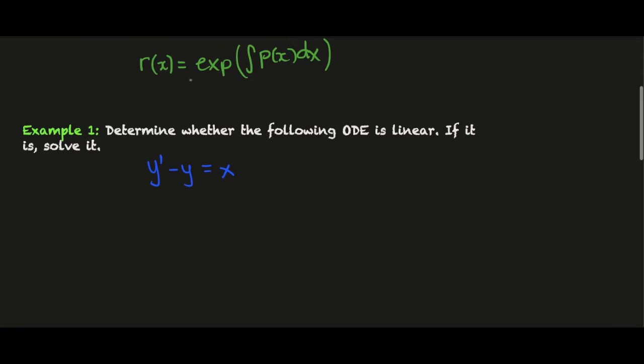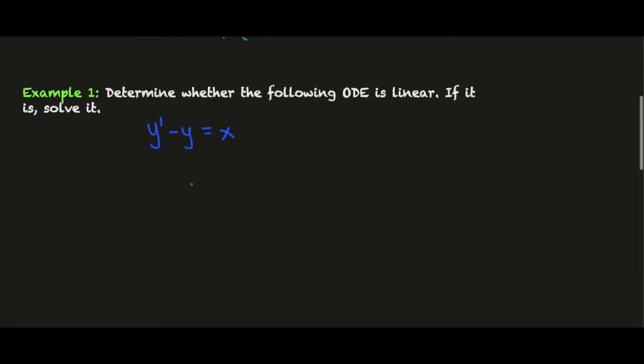Let's start with an example. Determine whether the following ODE is linear, and if it is, solve it. What is a linear ODE? A linear ODE is one in which the highest power of y is 1. In this case that happens to be the case since this is to the power of 1, there'll be a y to the 0 here and there's a y prime. If we solve this, let's put it in the usual form. We'll have y' - y - x equals 0.